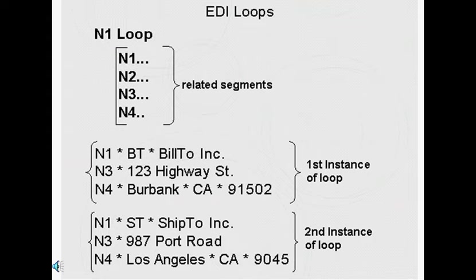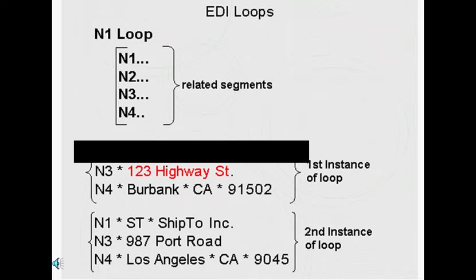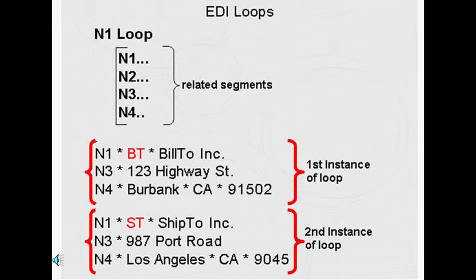In our example, we have the N1, N2, N3, and N4 segments in a loop. Note how the segments depend on each other — for example, the N3 segment with the street address value does not make sense without the N1 segment telling us that it is the street address of the Bill-To company. This example also shows how the loop is used twice to hold two different sets of information of similar format. The first loop holds the Bill-To address, while the second loop holds the Ship-To address.